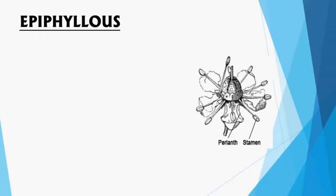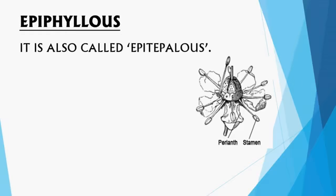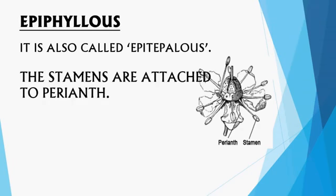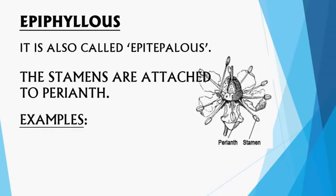The last type is epiphyllous. In this condition, the stamens are attached to the perianth. Perianth refers to the calyx and corolla together. In the photograph, some stamens are attached to the corolla and some stamens are attached to the calyx. Examples: lily and asparagus.